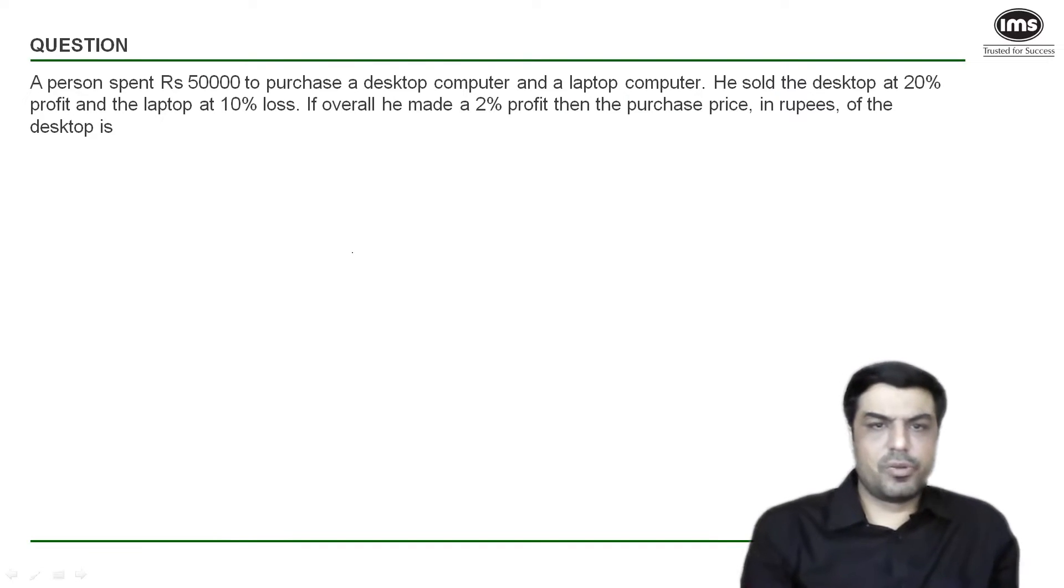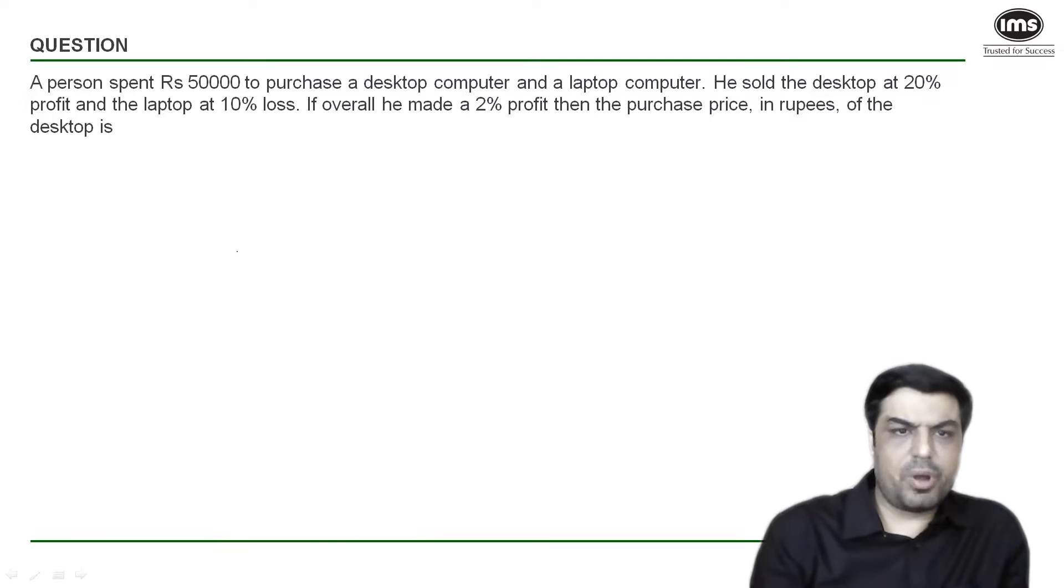We've got a profit and loss question here which says a person spent Rs 50,000 for a desktop and a laptop. The profit and loss percentages are given to us, and the overall profit percentage is also given to us. We have to find the price of the desktop.